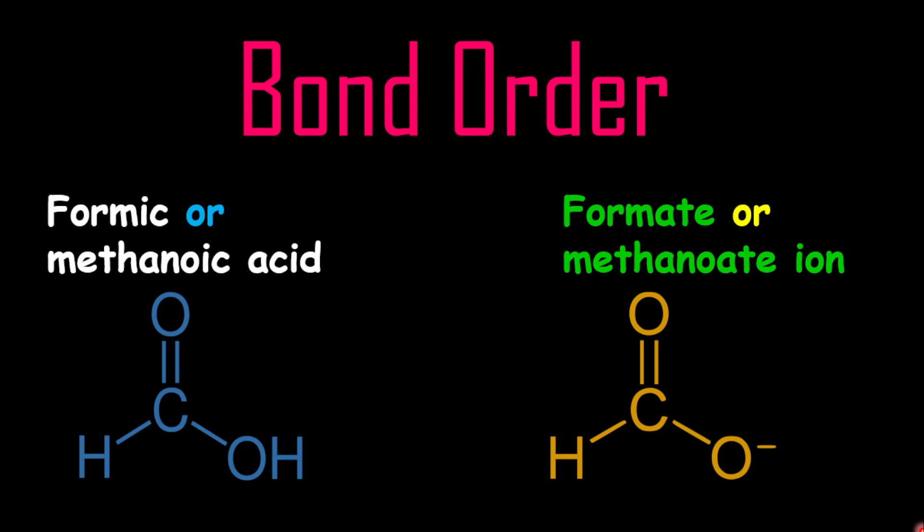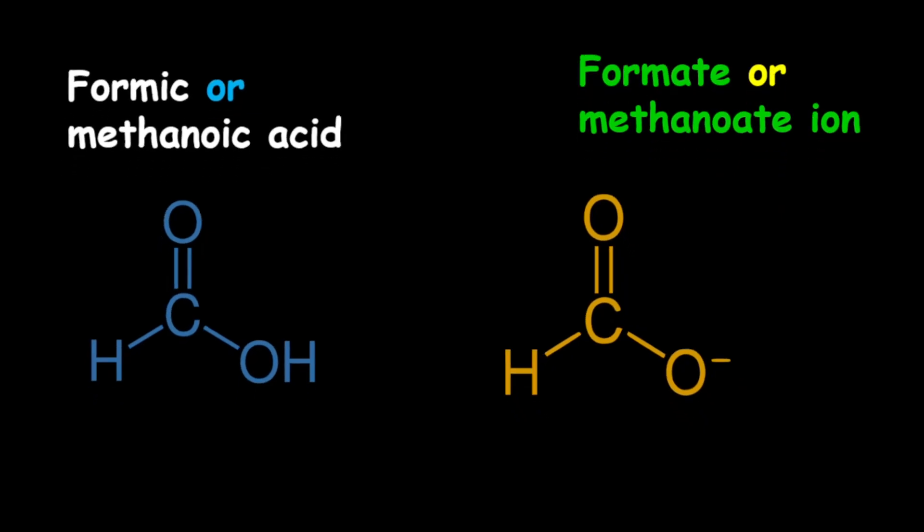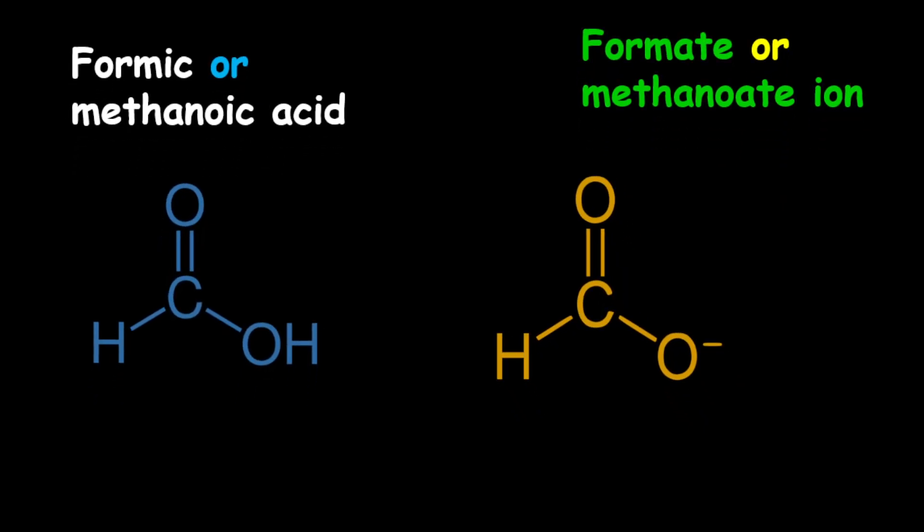Hello everyone, we're back here again doing another bond order example. Today we're going to look at formic acid versus the formate ion. Formic acid is the same as methanoic acid, and formate is the same as the methanoate ion. We're going to look at the differences between these two structures and see if the difference matters for bond order and the strengths of the bonds.